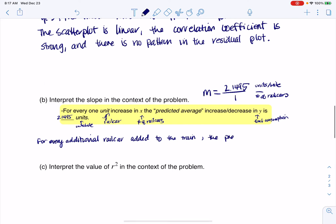The predicted average. Now I have to decide between increase and decrease, but I'm going to opt for increase because that slope was positive. So the predicted average increase in fuel consumption is 2.1495 units per mile. There we go. All right.